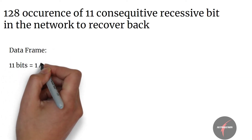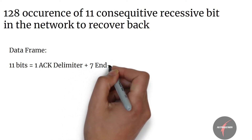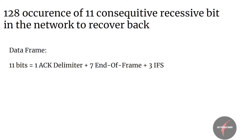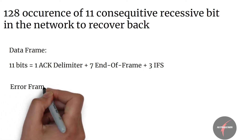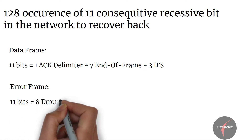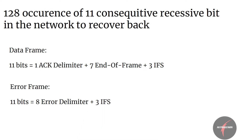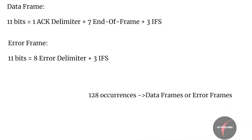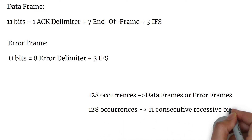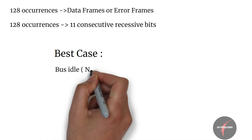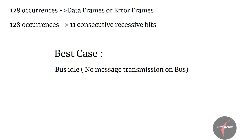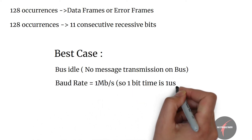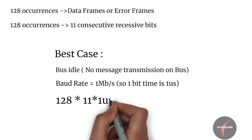The following occurrences can be considered for recovery: a data frame with 11 bits — accounting for 1 bit of acknowledgement delimiter, 7 bits of end of frame, and 3 bits of IFS — or an error frame with 11 bits containing 8 bits of error delimiter and 3 bits of IFS. In essence, you have to wait for 128 occurrences of a successful data frame or error frame, or simply 128 occurrences of 11 consecutive recessive bits. In the best case scenario, when the bus is idle, assuming a baud rate of 1 Mbps, you will need a total of 1408 microseconds. With this, we have covered the CAN error states and error flags.